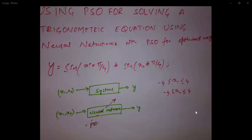Hi everyone, this video is about designing a neural network for a trigonometric function. Our trigonometric function is y = sin(x1·π/4)·sin(x2·π/4), where x1 and x2 lie between minus 4 and 4. This is our system which uses y as output from x1 and x2.